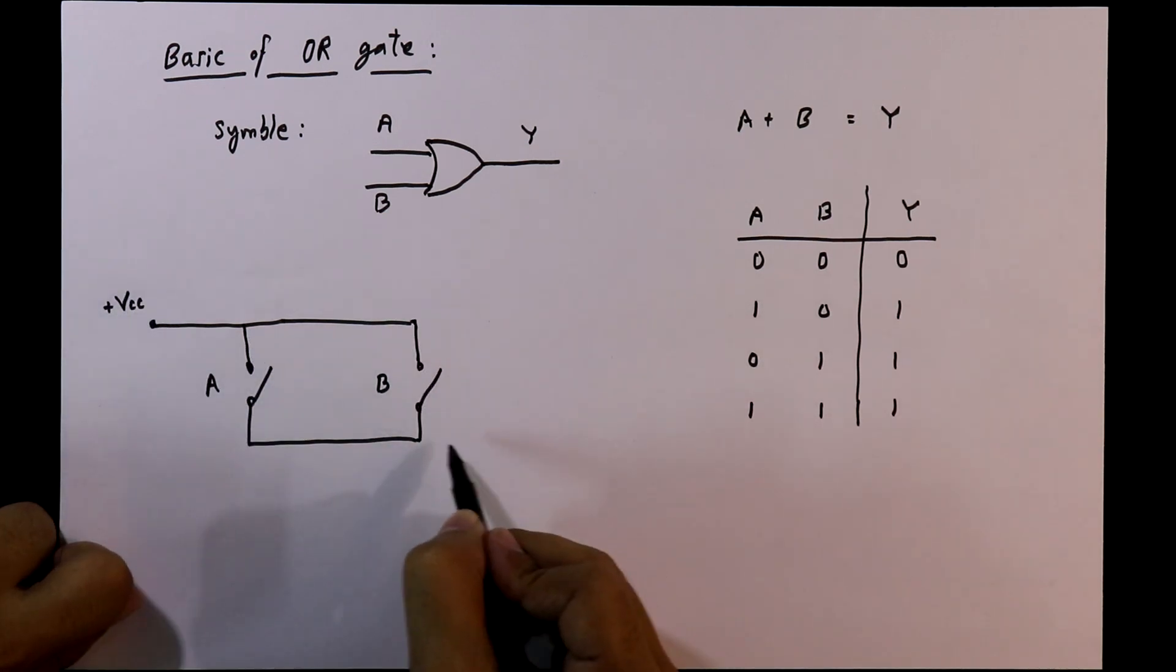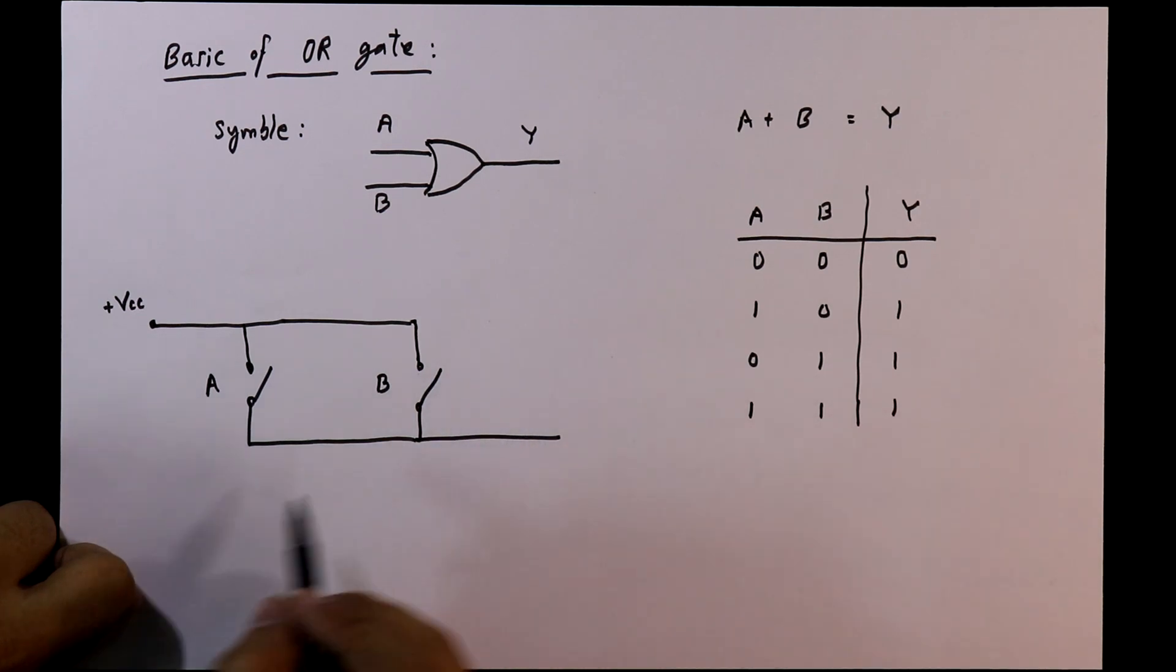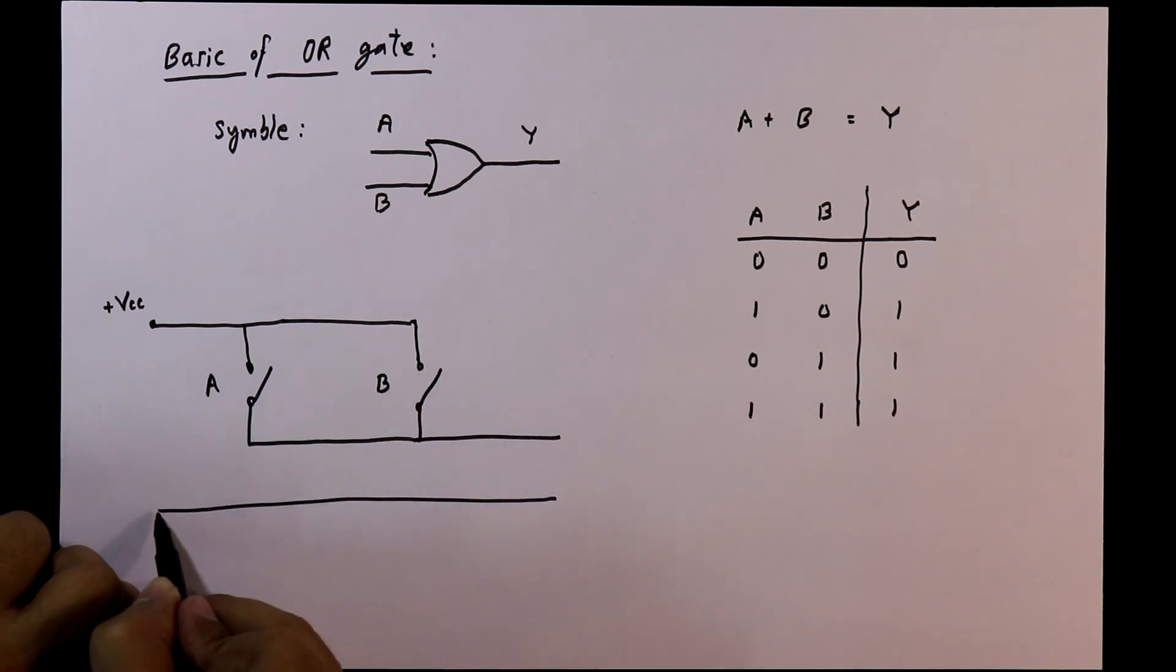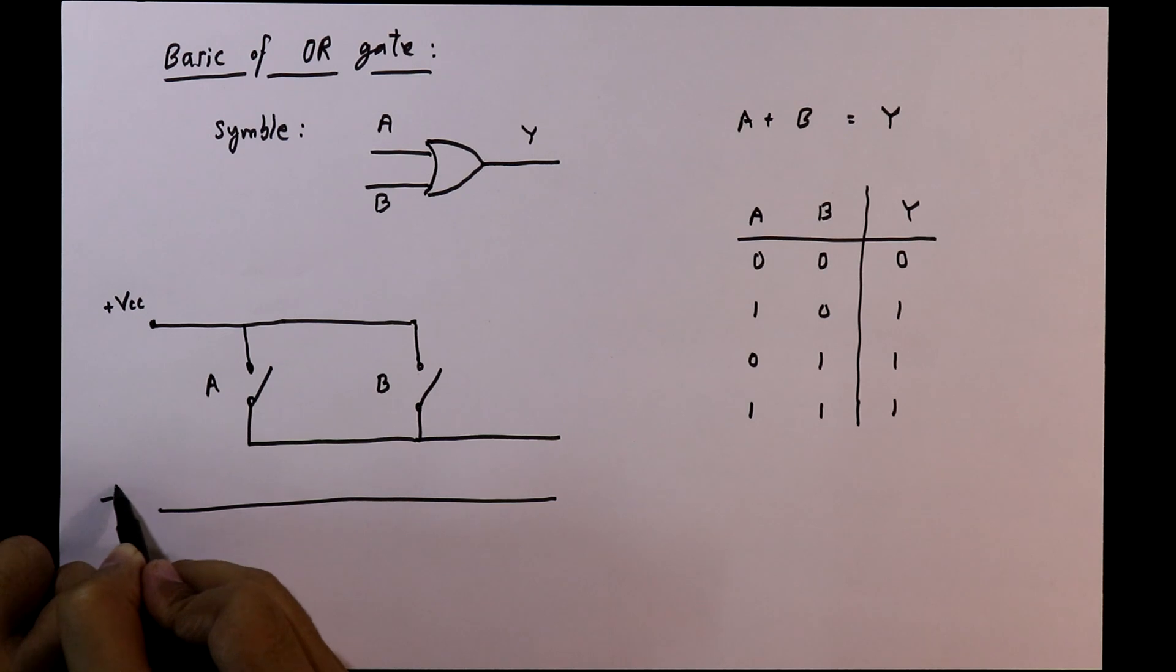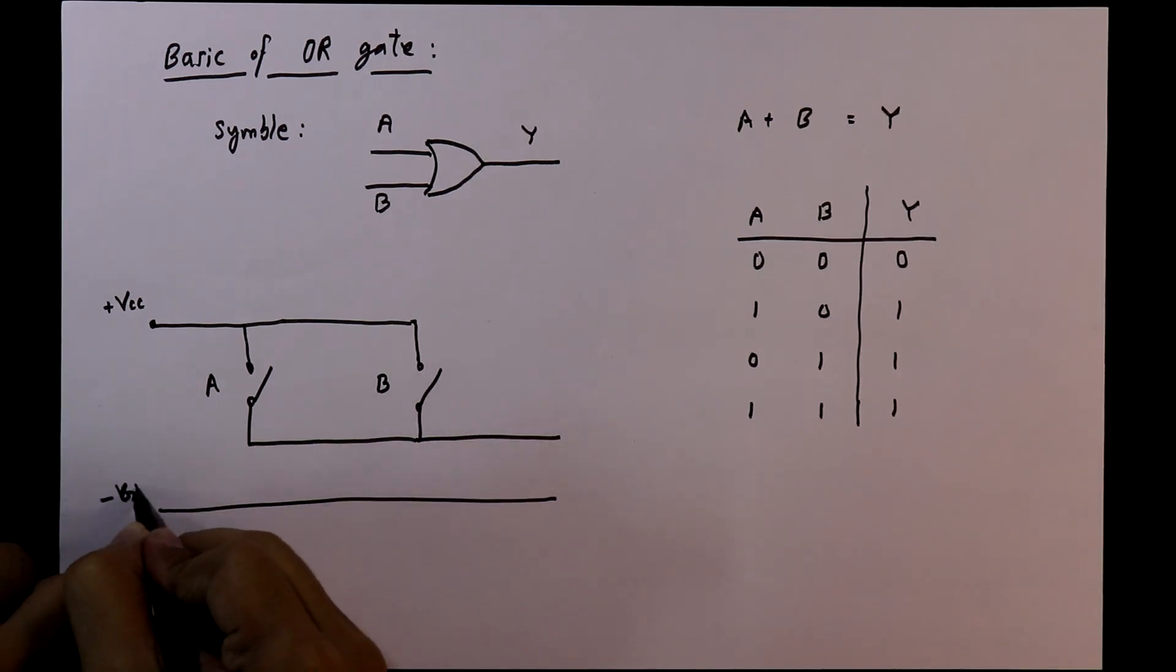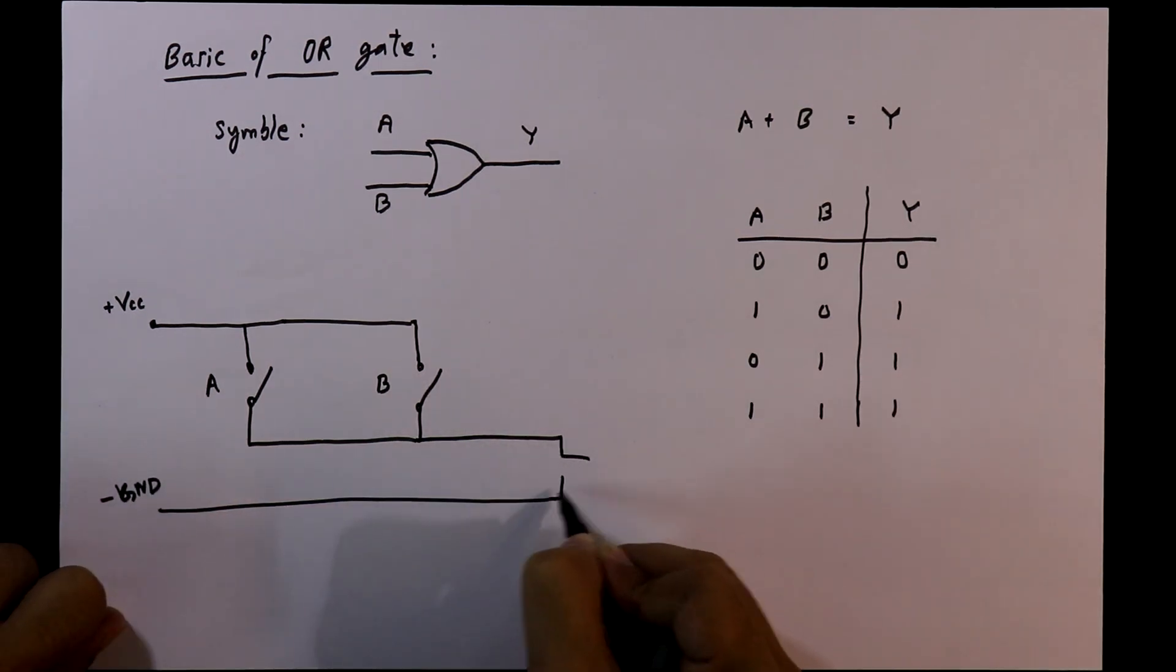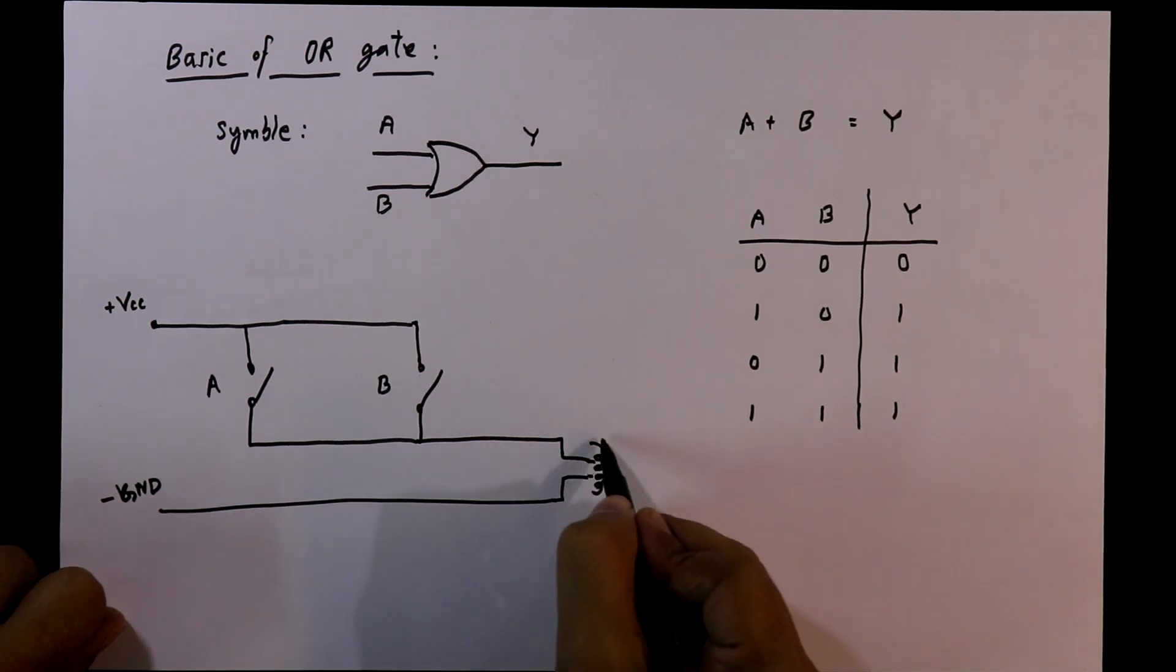We will provide at this point the positive voltage. And after the switch, we will connect the output. And other pin of the output is connected to negative or the ground. As the output, we will connect a normal bulb.